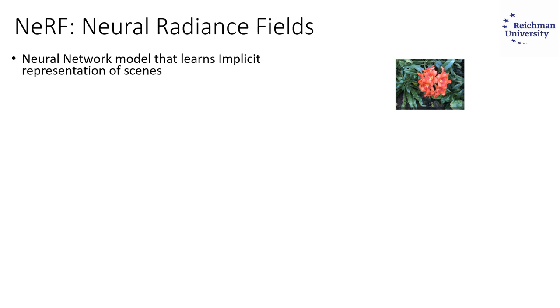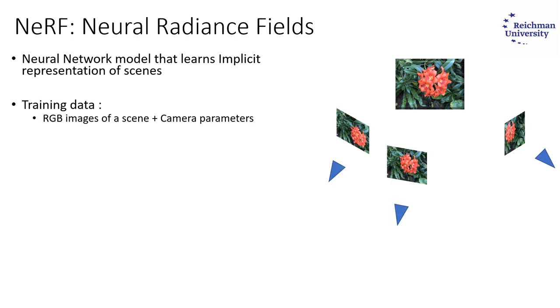NeRF was first introduced in 2020. It is a neural network model that learns implicit representation of the radiance fields of scenes. The training data is a collection of RGB images with their camera parameters, and the task is to synthesize a novel view of the scene.